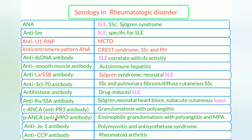C-ANCA (anti-PR3) and P-ANCA (anti-myeloperoxidase) are common and important. C-ANCA is for Granulomatosis with Polyangiitis (GPA), and P-ANCA is for Eosinophilic Granulomatosis with Polyangiitis (Churg-Strauss syndrome).